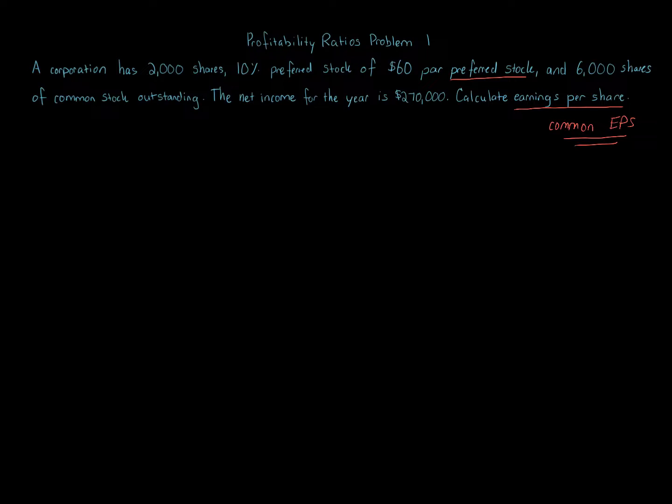The formula to calculate this is going to be net income NI minus preferred dividends. The dividends go to preferred stock because we're doing this specifically for common stock. And we divide that by the number of shares of common stock, the number of shares of common stock. And I'm going to note that it has to be weighted in some cases, weighted number of shares of common stock.